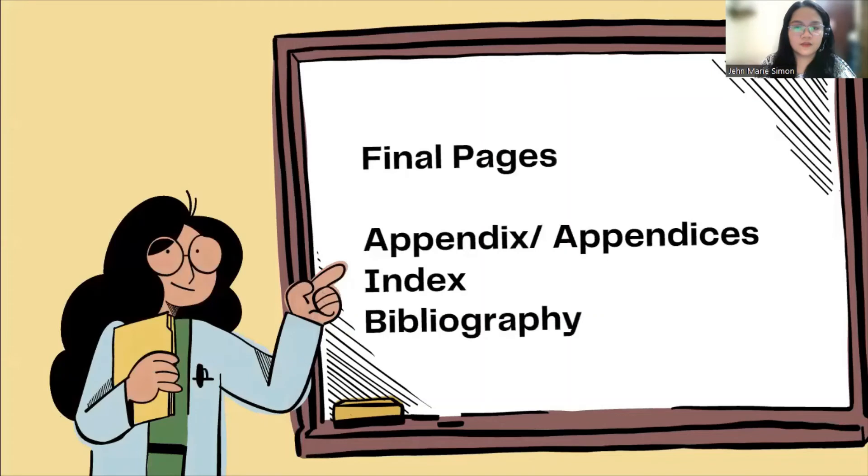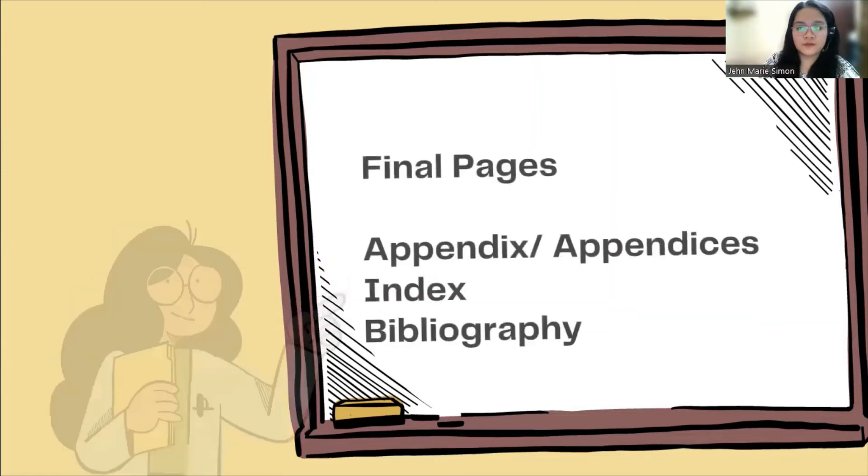And the third part of your research paper is the final pages. It includes appendices, kung ano na yung mga attached documents, pwedeng letter of intent, letter of consent, pwedeng approval letter from other people, yung questionnaire mo, mga ganon. Index and bibliography. That ends our simple discussion about the parts of a research paper. Let us have a brief review.